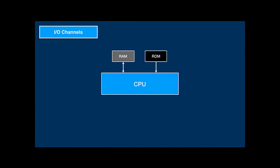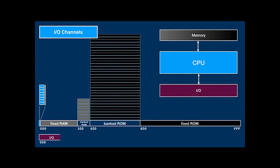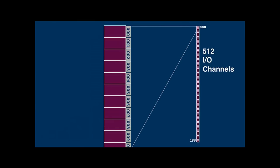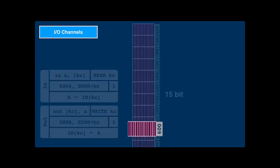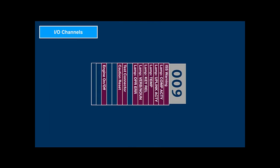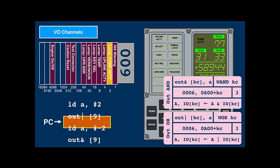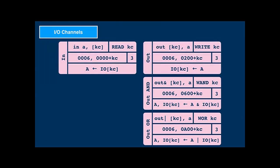We've seen that the CPU is connected to RAM and ROM via the memory bus, but computers also talk to peripheral devices via the I/O bus. There is a second address space to talk to devices — 512 I/O channels numbered 000 through 1FF. Each channel is 15 bits, and the in and out instructions can read words from and write words to I/O channels. For many devices, a channel contains 15 individual control bits. The out-or instruction sets individual bits and out-and clears individual bits. I/O instructions can work on the whole word or do Boolean operations: AND, OR, and XOR.